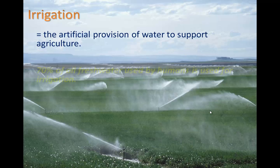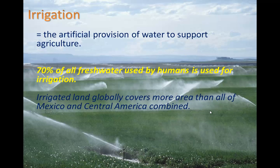Seventy percent of all fresh water used by humans is used for irrigation. That is a big number, and I want you to keep that number in mind as we go into our study of water in a couple of units. Irrigated land globally covers more area than all of Mexico and Central America combined.